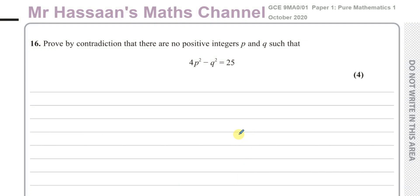Welcome back. This is Mr. Hassan's Maths Channel and I'm now answering a question from the UK A-level papers. This is from the GCE 9MA001 Paper 1, Pure Mathematics 1 from October 2020. These are the Edexcel UK papers, which are different from the International A-level, but the syllabus is pretty much the same in most things. I'm choosing a question from these papers rather than from the IAL papers for this particular topic of proof, because this is new in the syllabus. There are no questions like this in the previous International A-level papers like the C3 or C4 papers — you don't have these type of questions about proof by contradiction. So this is why I've decided to take this question from the GCE.